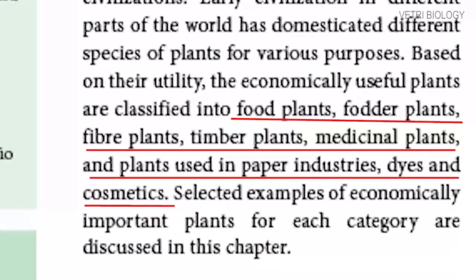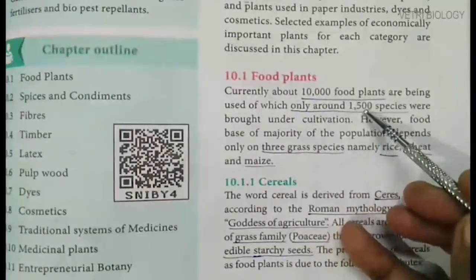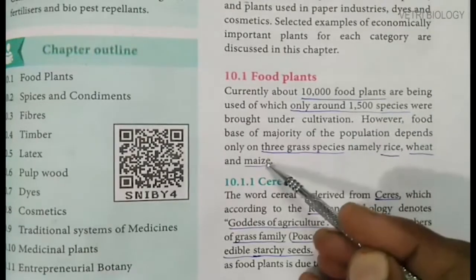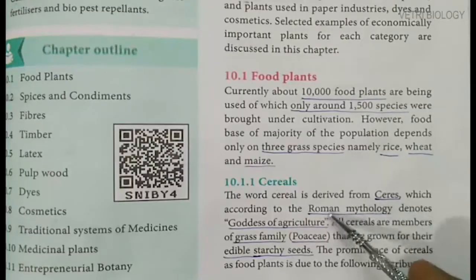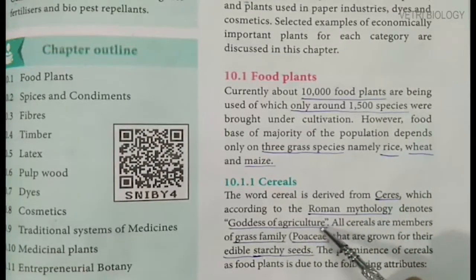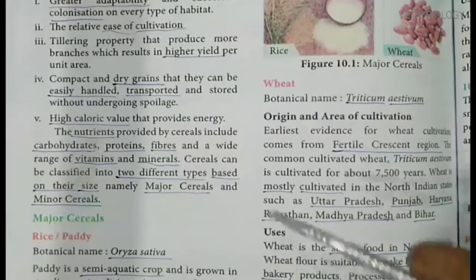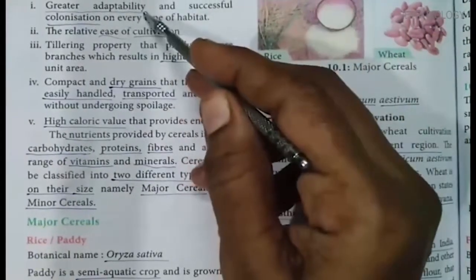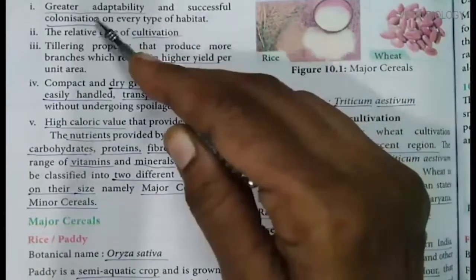Let us discuss the food plants. Currently, we are using 10,000 food plants but only around 1,500 species were brought under cultivation. We depend on three grass species namely rice, wheat and maize. They are called cereals. The word cereals is derived from the Latin root meaning goddess of agriculture according to Roman mythology. All cereals are members of the grass family called Poaceae. These plants have edible starchy seeds.